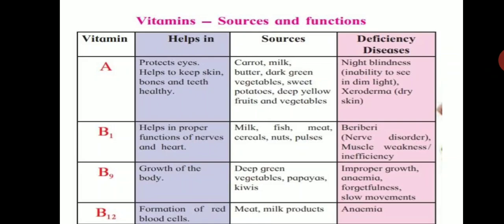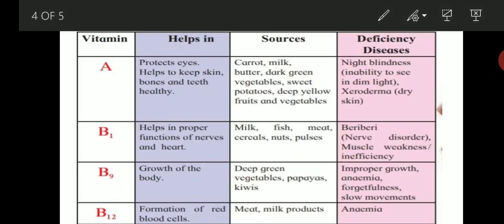Vitamin B1 helps in the proper functioning of nerves and the heart. The nervous system controls and coordinates our body using nerves, and the heart is the pumping organ of the circulatory system. Vitamin B1 helps in the proper functioning of both. Sources include milk, fish, meat, cereals, nuts, and pulses. Deficiency of vitamin B1 can cause beriberi disease, which is a nerve cell disorder, and also causes muscle weakness.